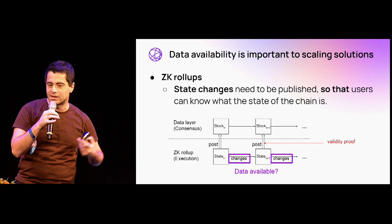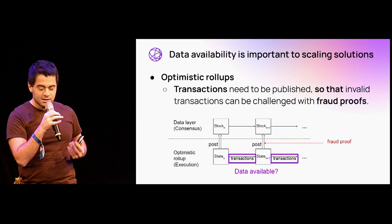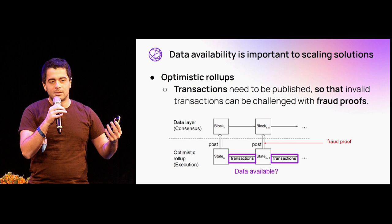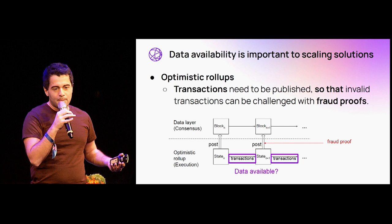For optimistic roll-ups, it's even more important because optimistic roll-ups rely on fraud proofs. If the transaction data behind that roll-up isn't available, then block producers or full nodes cannot generate a fraud proof if there's a malicious transaction inside the roll-up block, because they don't know what the transactions are and can't see which transactions are bad.